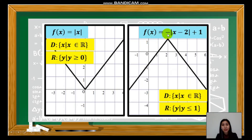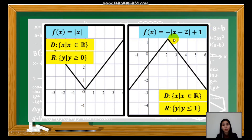In the next example, the value of a is negative, so the opening is downward. Since the opening is downward, when we find the range, we use less than or equal to the value of k. Here, the k value is positive 1, which is the highest point in the graph. So from positive 1 downward, the range is y ≤ 1.